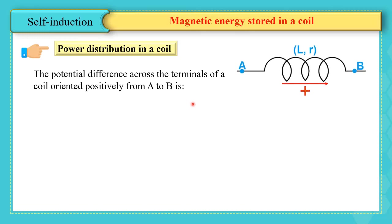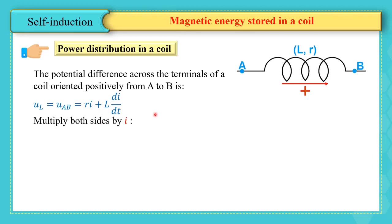To explain the magnetic energy stored in the coil, let's first discuss power distribution. The potential difference across a coil oriented positively from A to B is U_AB = Ri + L(di/dt). Multiplying both sides by i, we obtain: i × U_AB = Ri² + Li(di/dt).